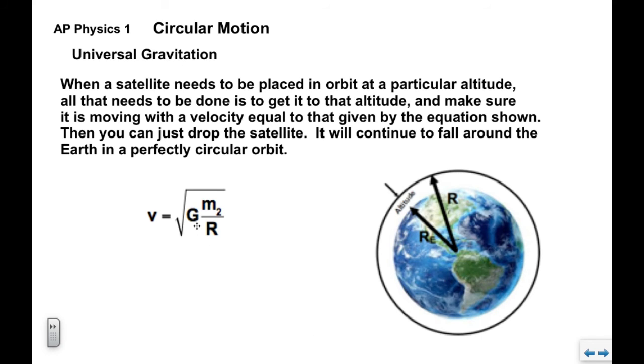So all we need to do is bring the satellite up to that given altitude, so we know the altitude at which the satellite's going to work. We bring it up to that altitude and then we just make sure that the shuttle or whatever is carrying the satellite is moving at this speed. If it's moving at this speed, all we got to do then is drop the satellite. Open the doors on the space shuttle and literally drop the satellite, and the satellite will continue to fall around the Earth in this perfectly circular orbit until we decide to either decommission it or shoot it down.